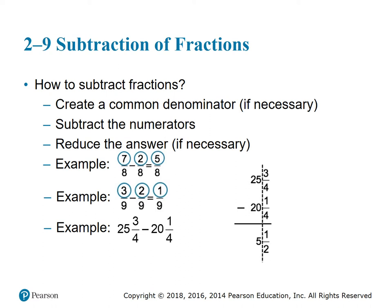For a mixed number example, we can set it up vertically or horizontally. Subtract the fractions first — they both have the common denominator 4, so 3 minus 1 gives 2/4. Then subtract whole numbers: 25 minus 20 gives 5. Our answer is 5 and 2/4. Can it be reduced? Yes — 2 divides into both numerator and denominator, giving a final answer of 5 and 1/2.